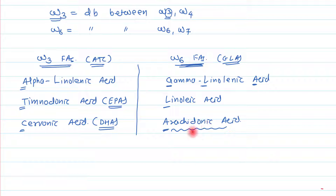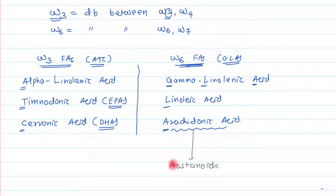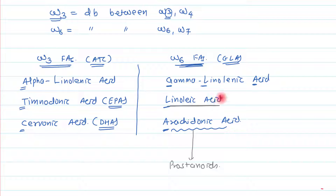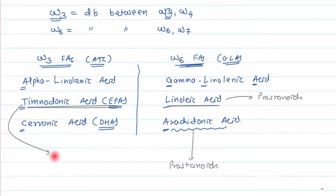Arachidonic acid can synthesize prostanoids. Most students believe that prostanoids can only be synthesized from arachidonic acid, but this is not true. Prostanoids can also be synthesized from linoleic acid, and timodonic acid (eicosapentaenoic acid) can also synthesize prostanoids.